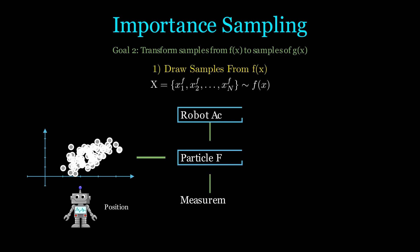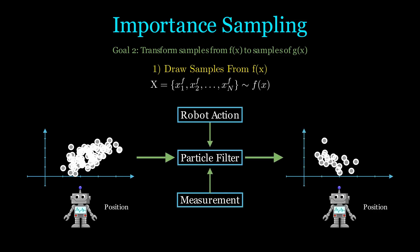After the motion and measurements, we want to transform this set of particles to another probability distribution that represents the new hypothesis of where the robot is.